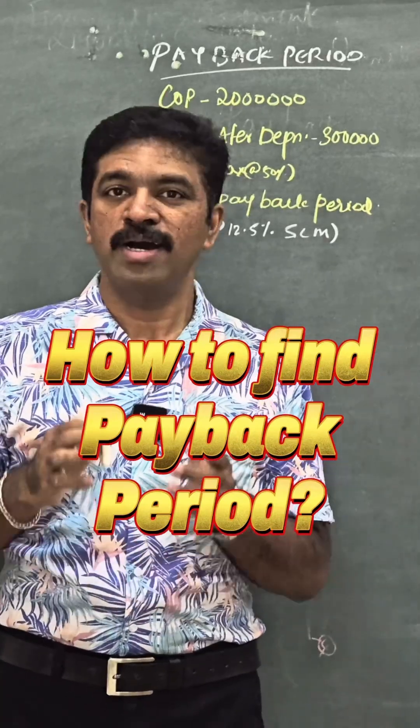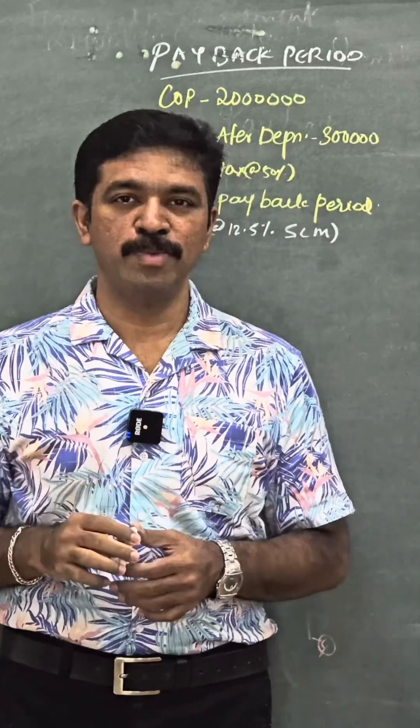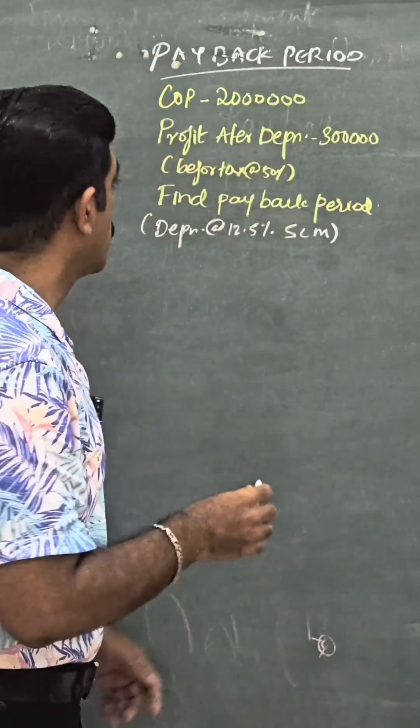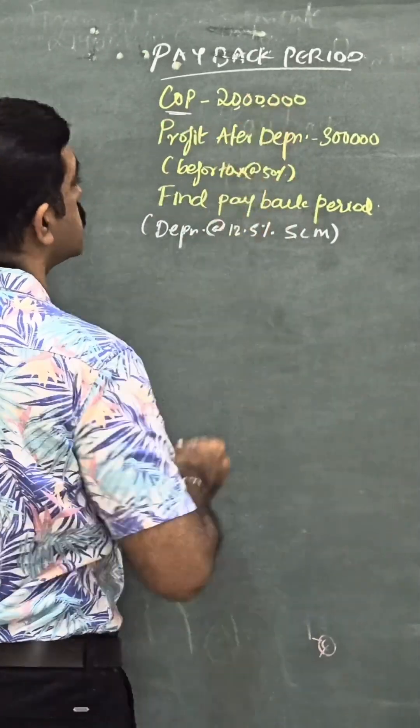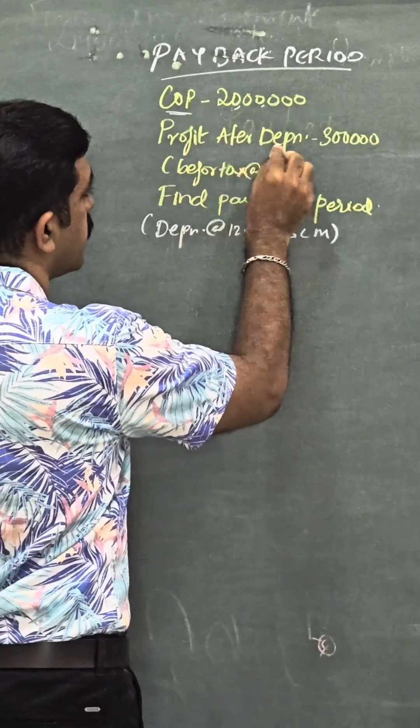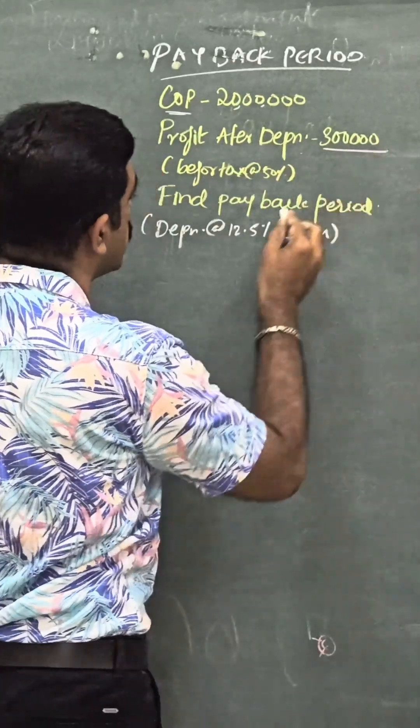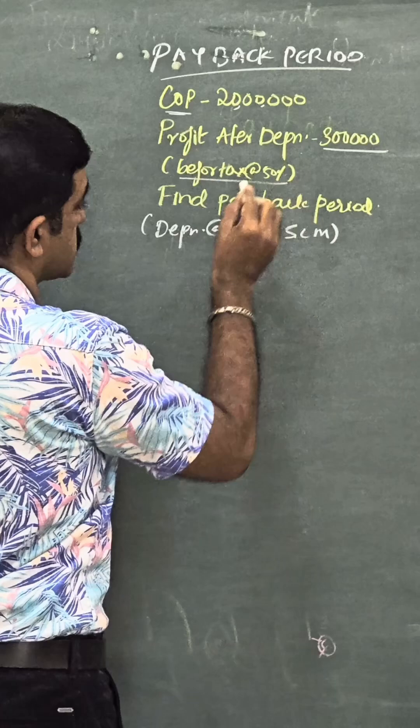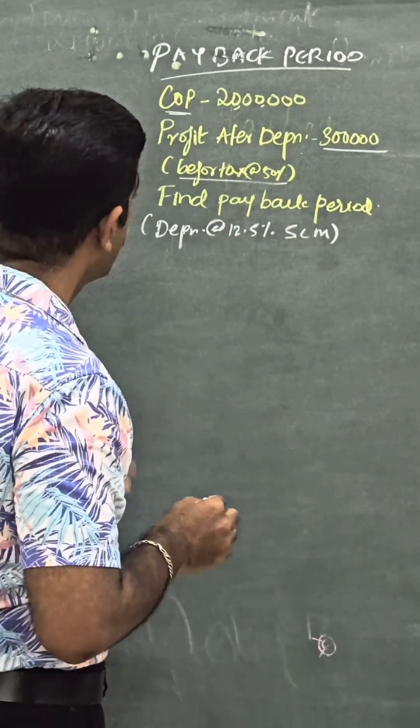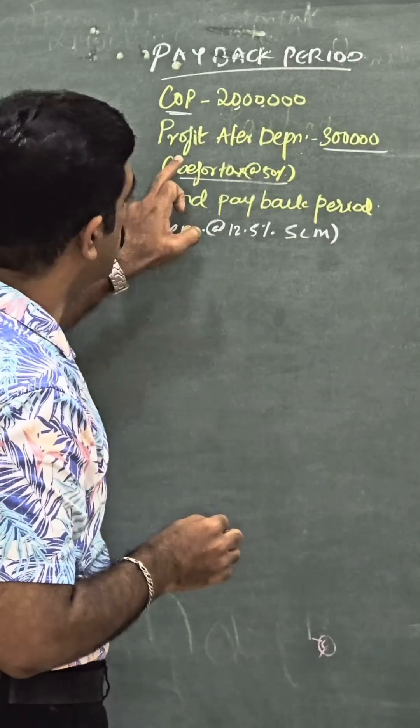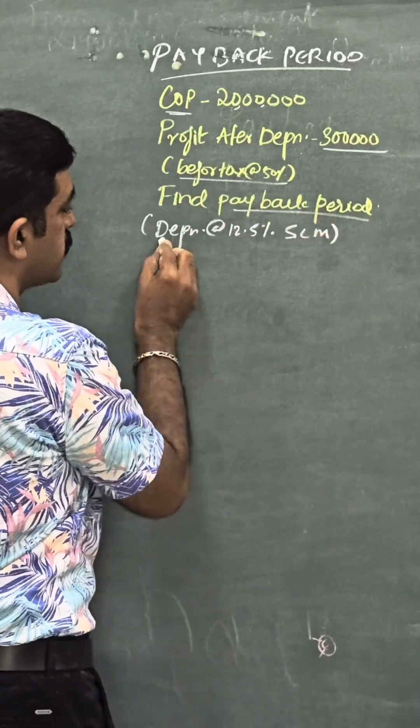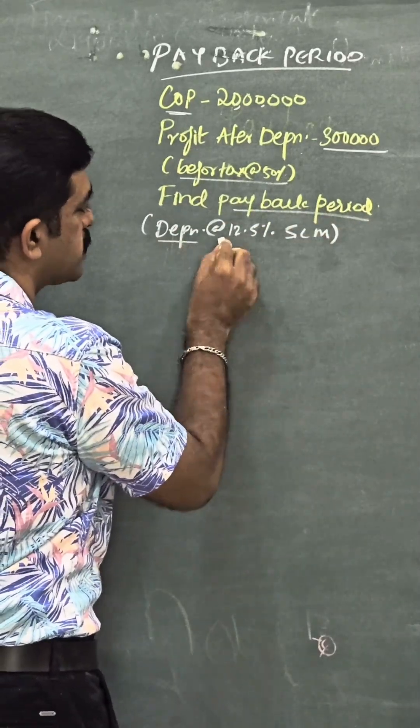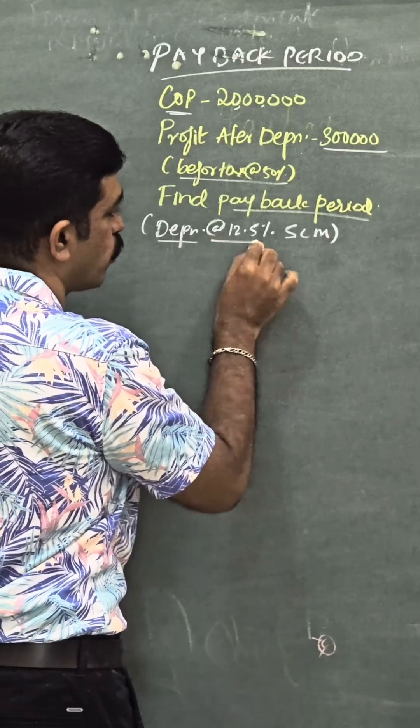In this video let's find out the payback period with the available information. Look at here, you have the cost of project as 2 million, that is 20 lakhs. You have profit after depreciation 3 lakhs, and this is before tax at the rate of 50 percent. So it is profit after depreciation but before tax. You have to find out the payback period and you are given this additional information: depreciation is charged at the rate of 12.5 percent on straight line method.